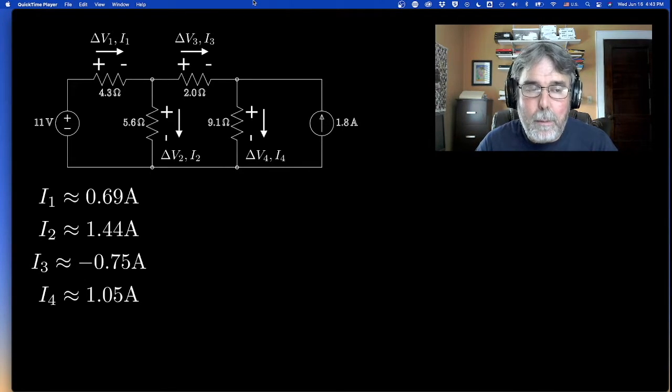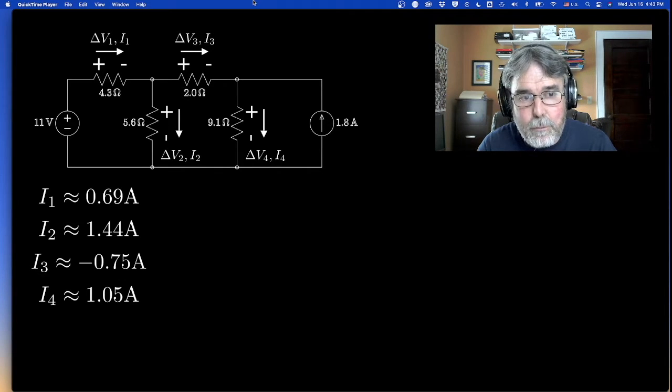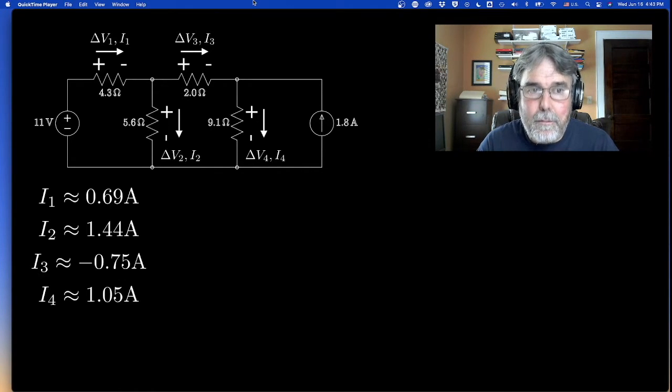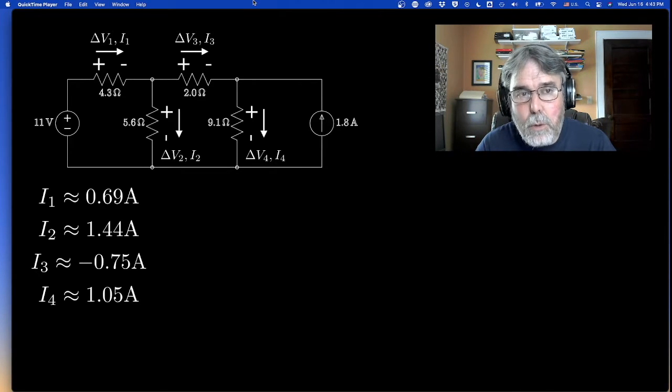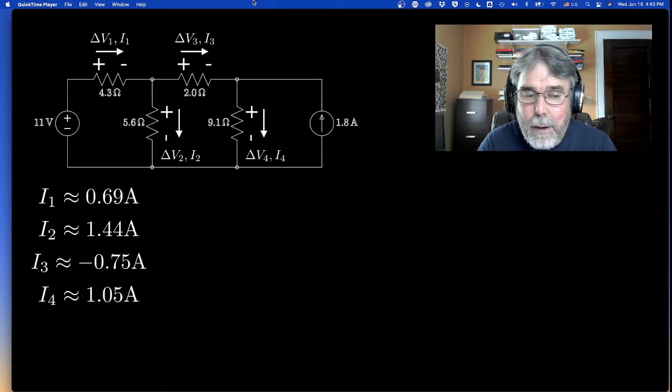So you may remember that we solved for the four currents in the four different resistors. The 4.3 ohm resistor had a current of 0.69 amps. The 5.6 ohm resistor had a current of 1.44 amps. The current through the 2 ohm resistor was a little weird. It came out negative.